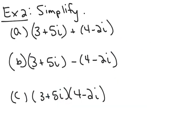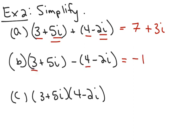There is a way to work with complex numbers on your graphing calculator — i is the second function above the period. If you wanted to evaluate any of these problems, you could type them in verbatim, hit enter, and the right answer would come out. However, for addition and subtraction, it's probably easier to just do them in your head, because adding and subtracting complex numbers is the same as adding and subtracting like terms. You add the real parts and add the imaginary parts. For subtraction, subtract the real parts — 3 minus 4 is negative 1 — and subtract the imaginary parts: 5i minus negative 2i is positive 7i.